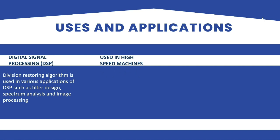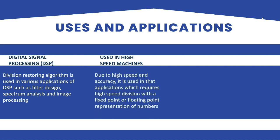The second use is in high-speed machines. Due to high speed and accuracy, it is used in applications which require high-speed division with a fixed point or floating-point representation of numbers. Division restoring algorithm is used in high-speed machines to perform division operations efficiently. The algorithm can reduce the computational complexity of these operations and improve efficiency. It can be implemented in hardware as a dedicated circuit or in software as an algorithm.